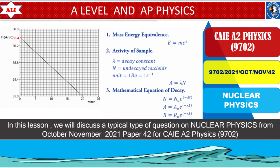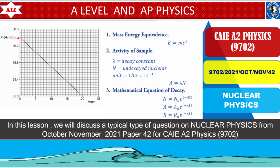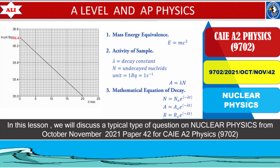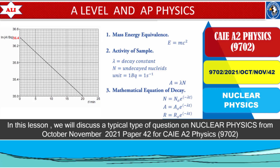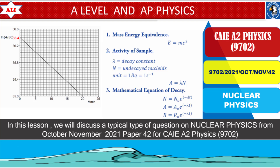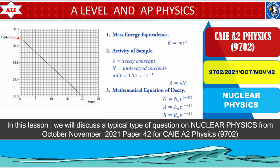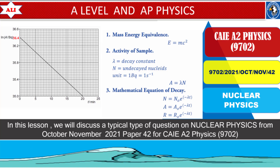Welcome to A-Level and AP Physics. In today's lesson we will discuss an important and tricky question on nuclear physics from October November 2021 Paper 4 Variant 2. We will discuss what is meant by random decay and spontaneous decay, how to calculate the decay constant from a graph of ln(A) against time, how to determine half-life, and how to find the nucleon number of radioactive nuclei if the mass of the sample is given.